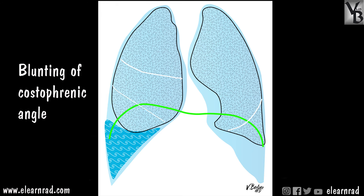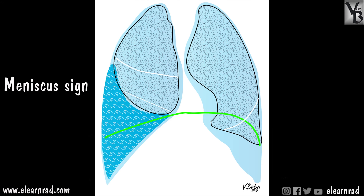Between 200 to 500 ml, the first sign of fluid appears on an erect frontal chest x-ray, which is the blunting of the costal phrenic angle. As more fluid accumulates, the superior margin of the opacity appears concave towards the lung, higher laterally than medially — this is called the meniscus sign. Above and medial to the meniscus, the lung will appear hazy due to fluid anterior and posterior to the lung.